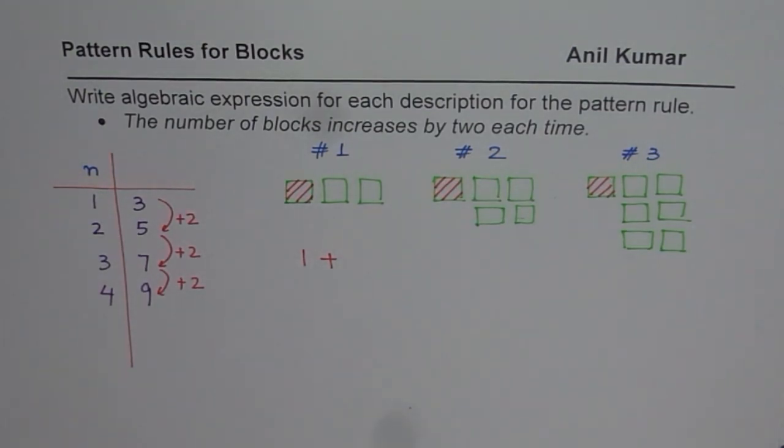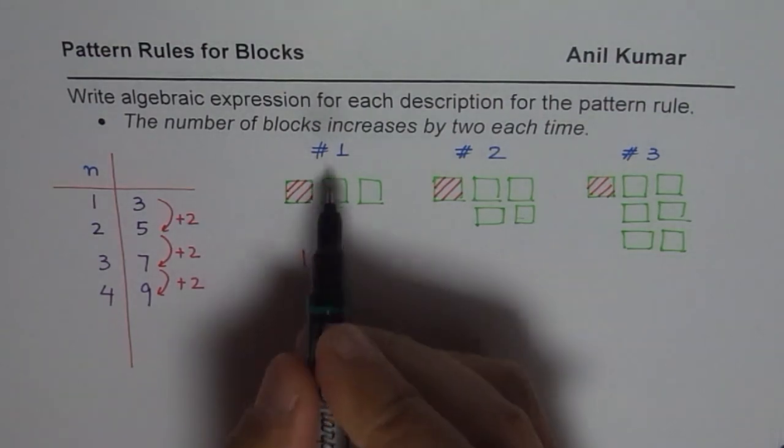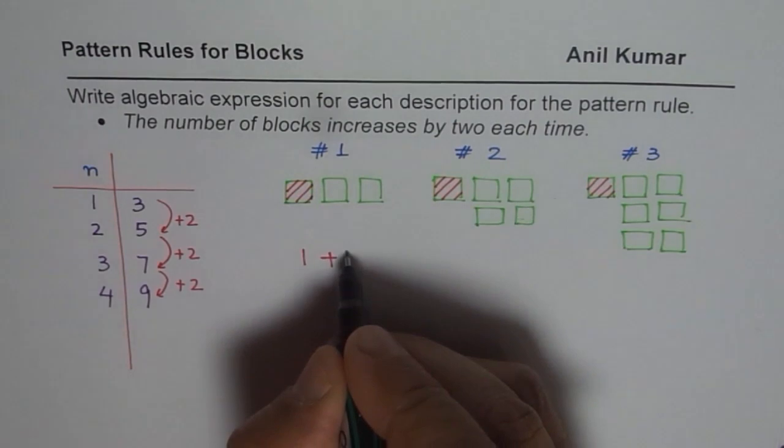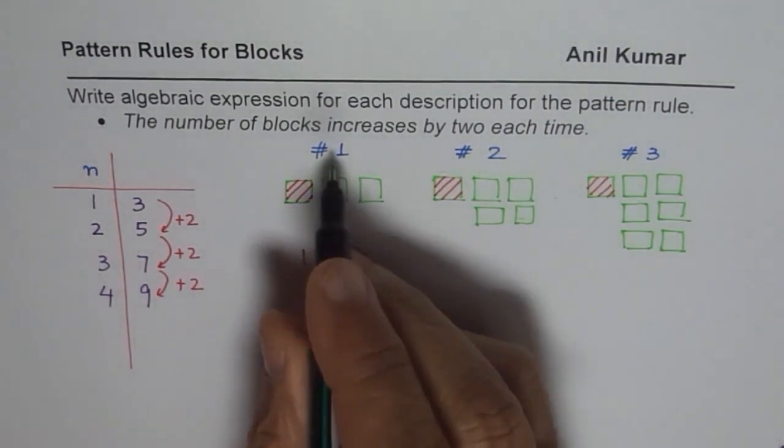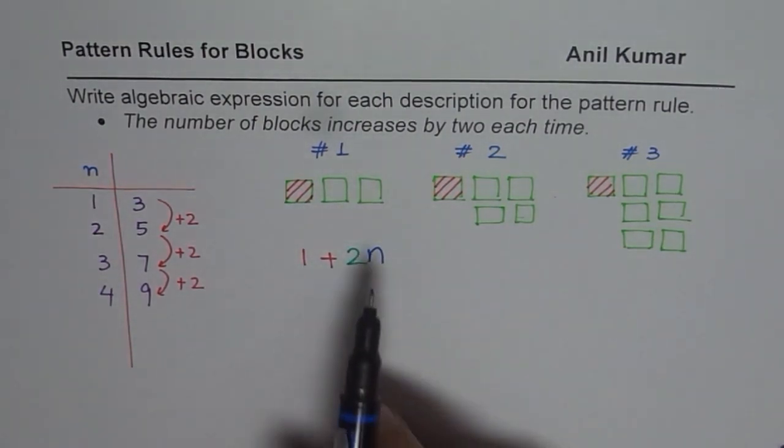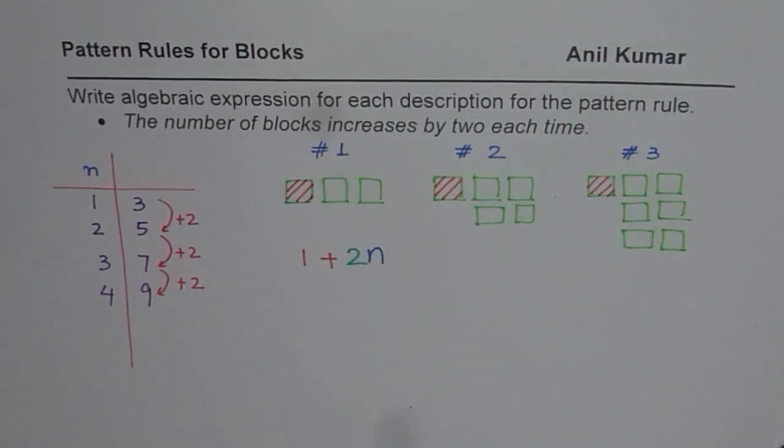I can say one plus how many green blocks? Well it seems that the green blocks are two times this number. Do you see that? Green blocks are two times n which is one for us in this case. So one plus two times n could be an algebraic expression describing this particular pattern. Do you get the point?